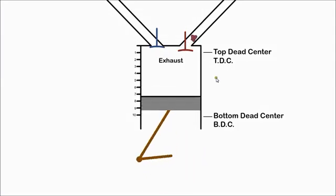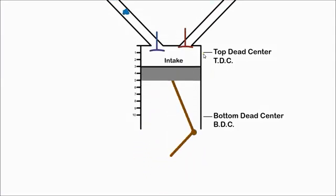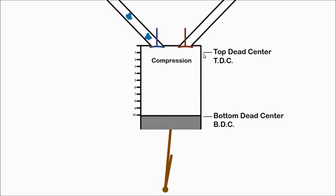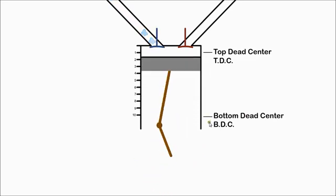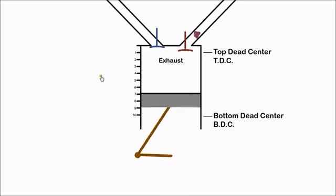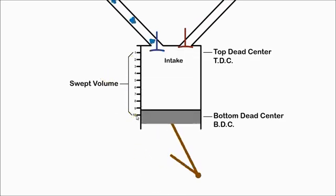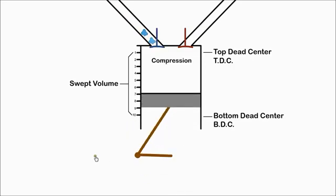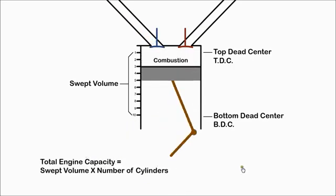The top position of the piston is called Top Dead Center (TDC) and the bottom position is called Bottom Dead Center (BDC). The volume between the two is called the swept volume. The total engine capacity is the swept volume multiplied by the number of cylinders.